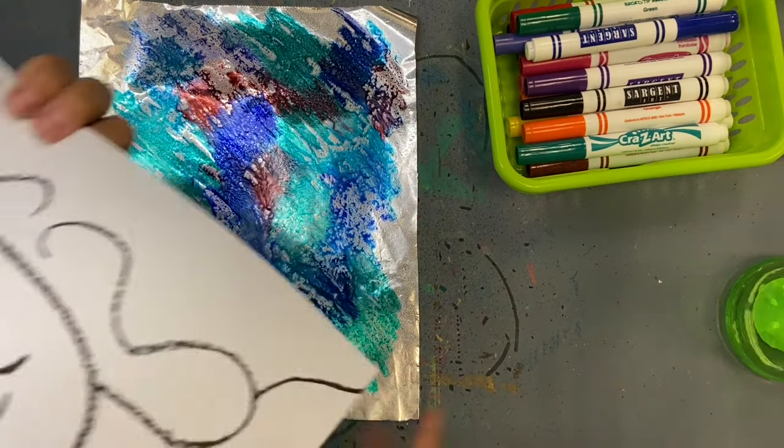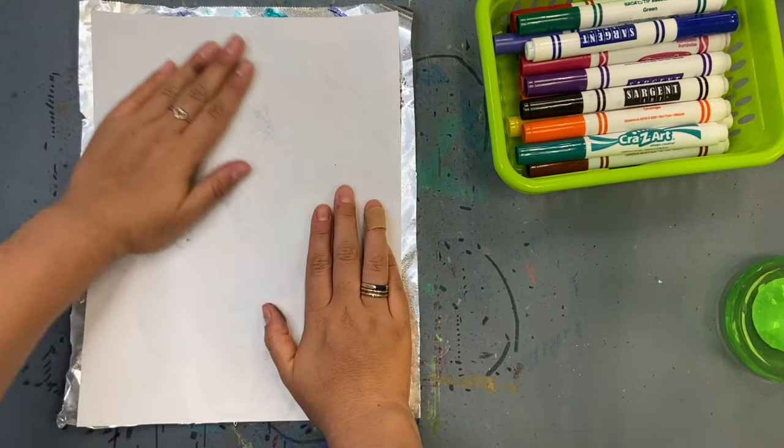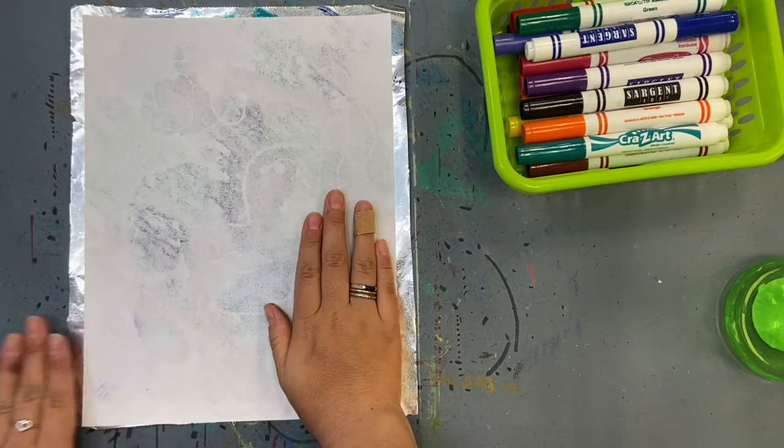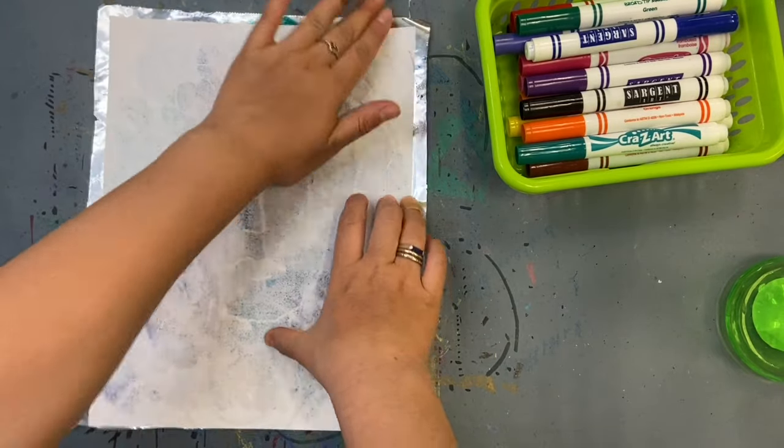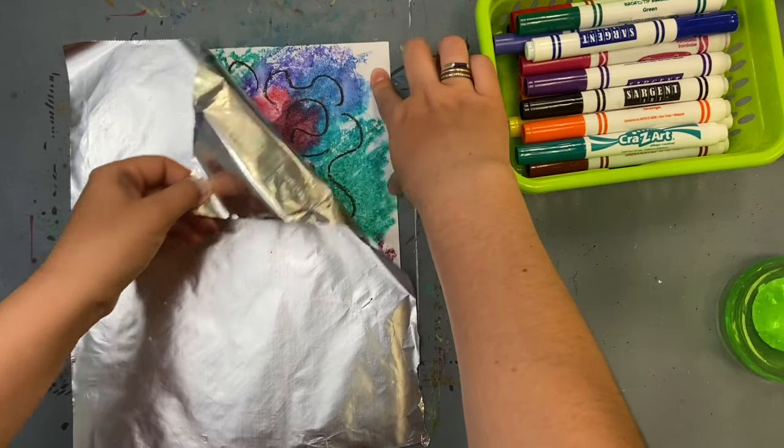Wait a few seconds, then turn your portrait over so the drawing side is touching the wet markers. Rub the back, turn it over, and peel away the foil. Your portrait should be full of color!